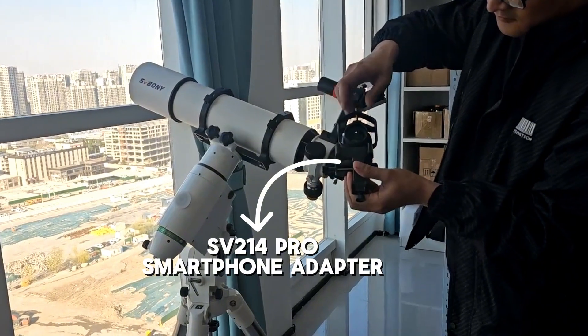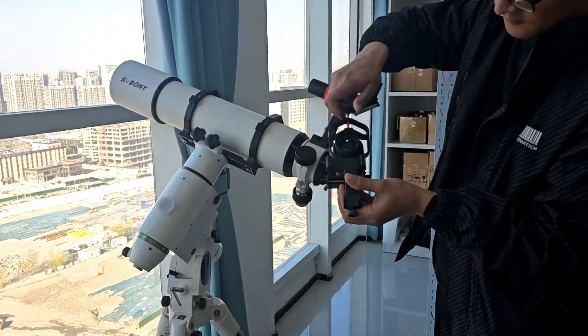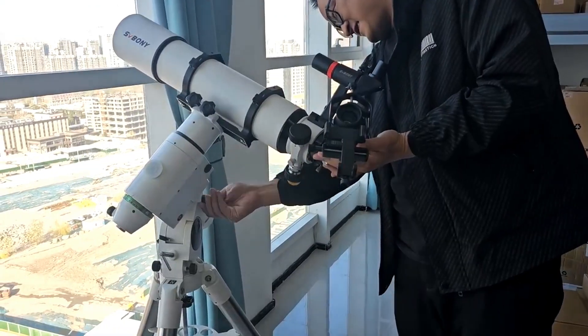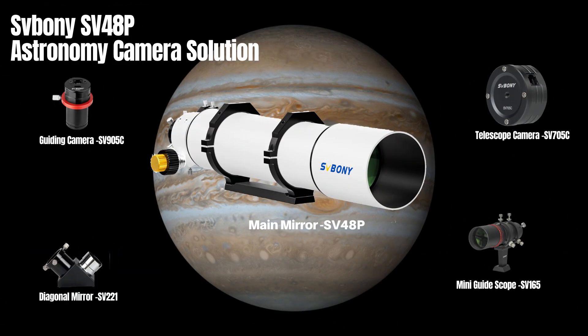Last step, we will install the Iceway 214 Pro phone holder to let you capture the beautiful sky directly with your mobile phone camera. Next is the astro camera method.